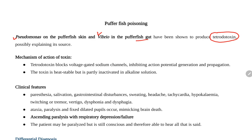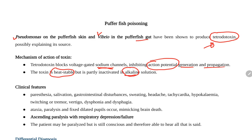The mechanism of action of tetrodotoxin: tetrodotoxin blocks voltage-gated sodium channels. Blockage of voltage-gated sodium channels means the generation and propagation of action potentials will be inhibited. Action potentials will not be generated or propagated. Another important characteristic: tetrodotoxin is heat-stable, but it is partly inactivated by alkaline solution. This information will help us in the treatment section.